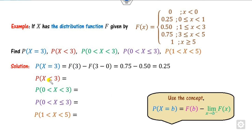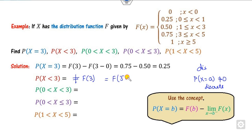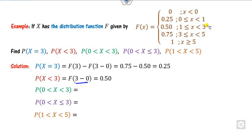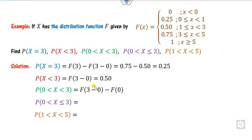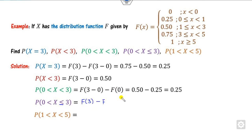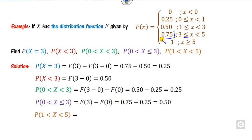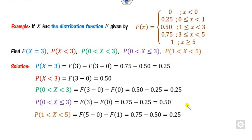Since it is discrete, P(X < 3) cannot use F(3) directly, because probability at a single point is not zero for a discrete variable. So write it as F(3 − 0), i.e., the left-hand limit, giving 0.50. For P(0 < X ≤ 3): since equality appears at 3 but not at 0, write F(3) − F(0) = 0.75 − 0.25 = 0.50. For F(5), substitute similarly.